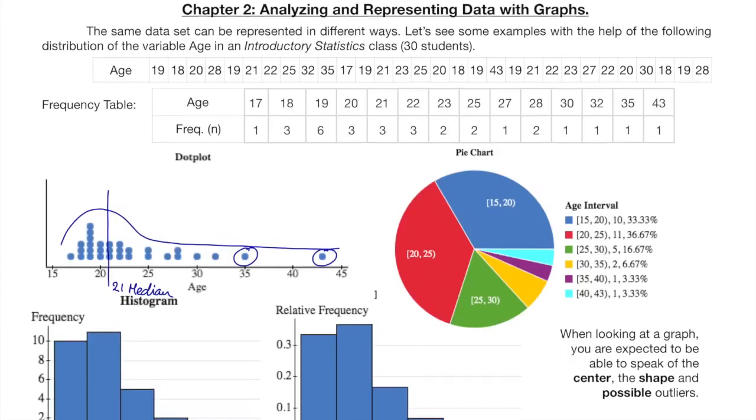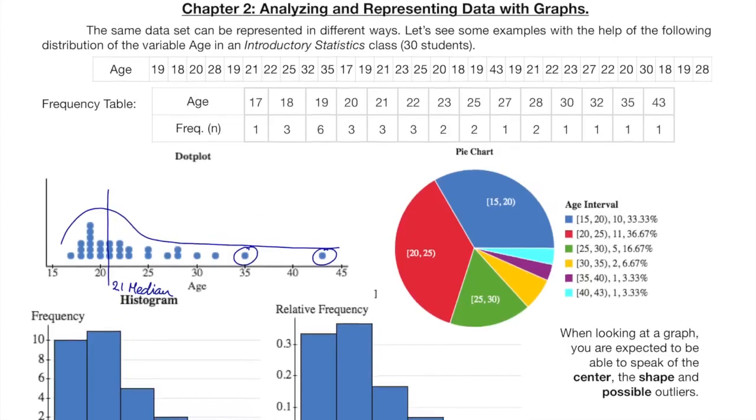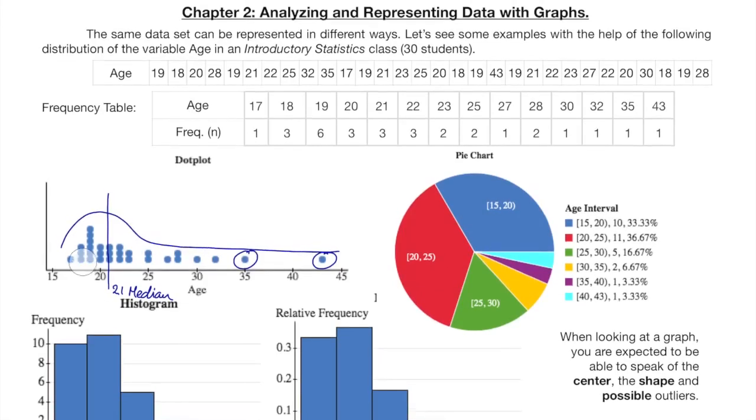By now, the concept of outlier is simple: a value that steps out of the pattern. In this distribution, individuals are around here, but this 43 is stepping out, and maybe the 35 too. Like I said before, this dot plot contains the same information as the frequency table.